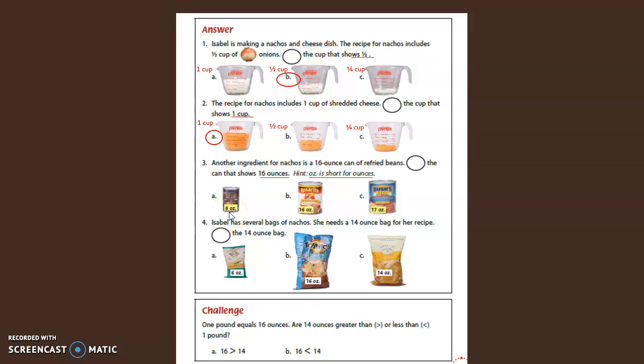So this can says eight OZ, or eight ounces. This can says sixteen OZ, or sixteen ounces. This can says seventeen OZ, or seventeen ounces. So which can do we circle that shows sixteen ounces? Correct, B. That can of refried beans shows sixteen ounces.